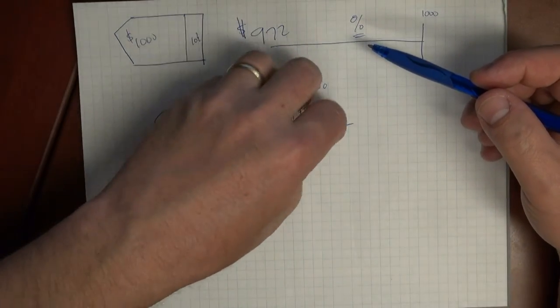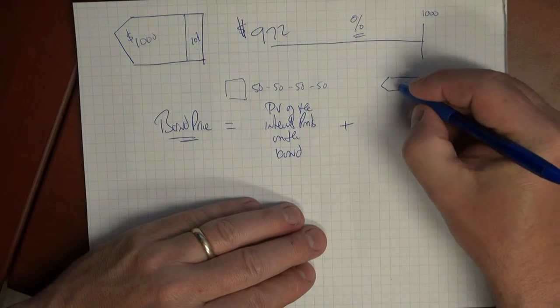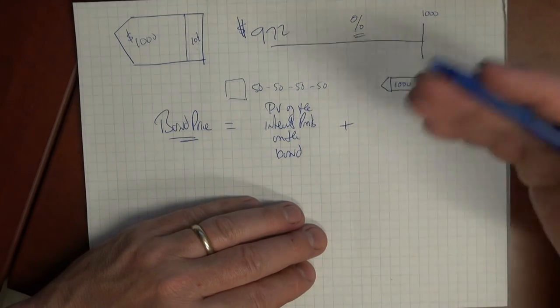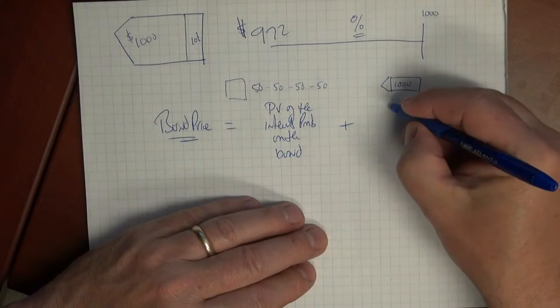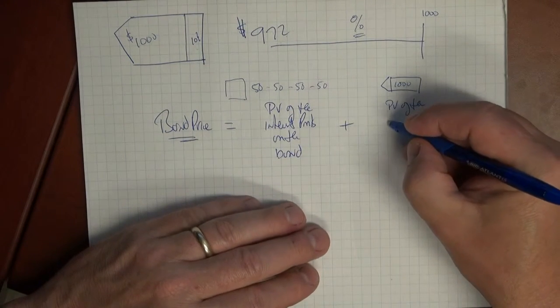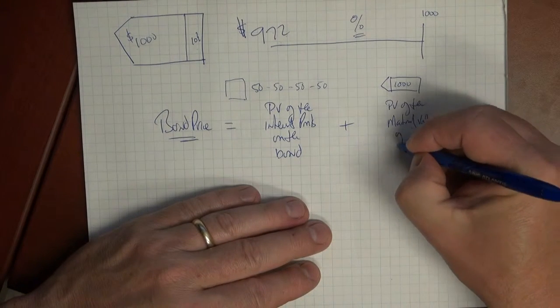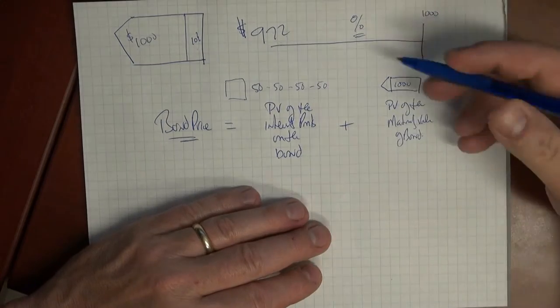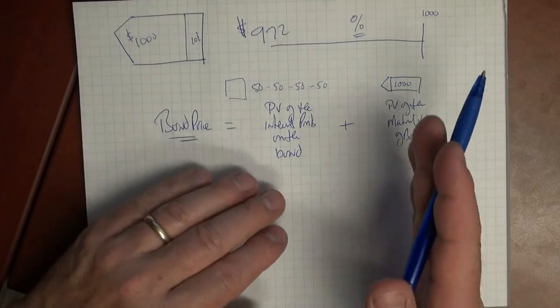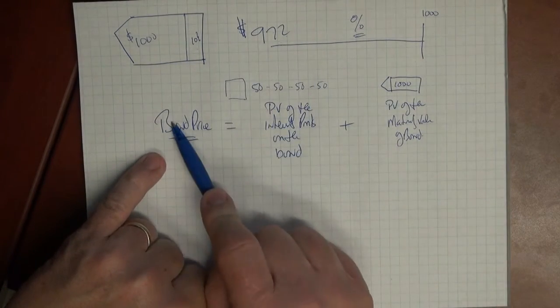So the bond price incorporates that stream of money, plus it incorporates the $1,000. And what we're really trying to do is say, okay, that $1,000 is going to come into our hands in a couple or three or four years. So what is its present value now? So we need to be able to calculate the present value of the maturity value of the bond. So the bond matures, got to pay $1,000. We want to know what's that worth now. So if we draw two of these things back, that will give us the bond price. So this and this will give us the bond price.